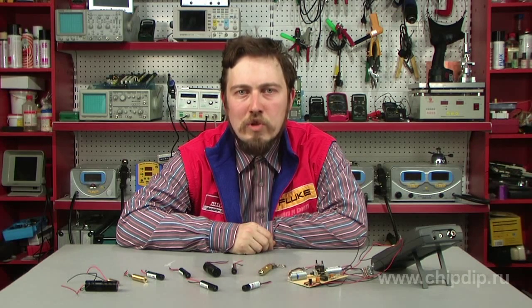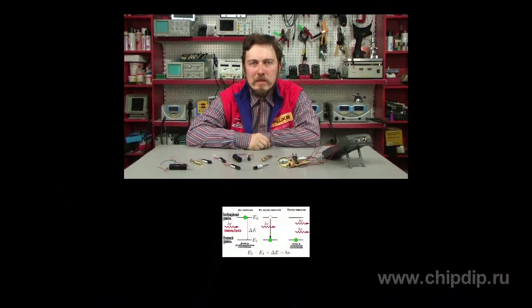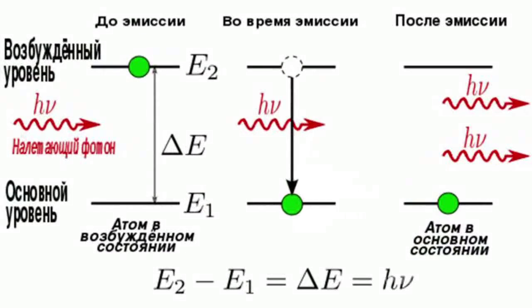A physical basis of the laser's operation is a phenomenon of induced emission. The essence of the phenomenon is as follows. We choose an atom, a molecule or an ion. It must have two energy states, E1 and E2, between which a radiation transition is possible.